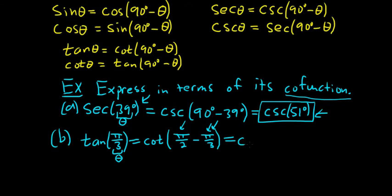So this is the cotangent. Now you have to subtract these. So we have to have the same denominator. The common denominator is 6. So we're going to multiply this one by 3 over 3, and this one by 2 over 2. That's going to give us 3 pi over 6 minus 2 pi over 6.